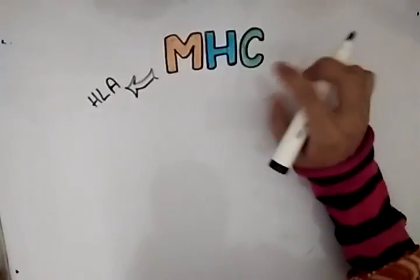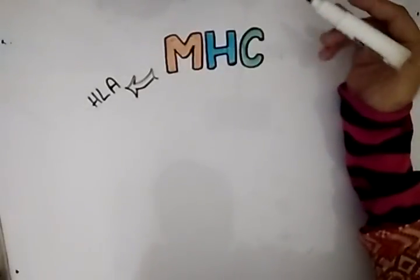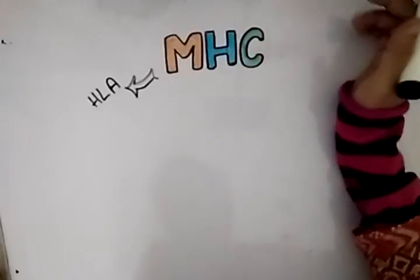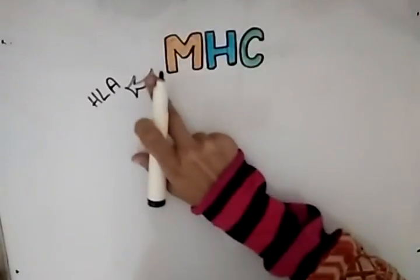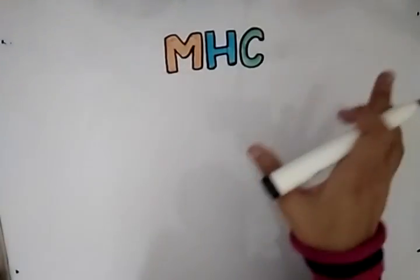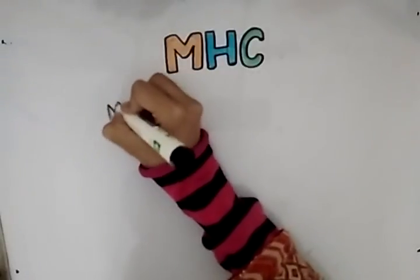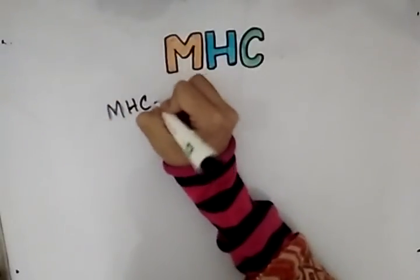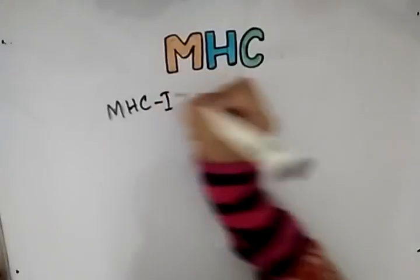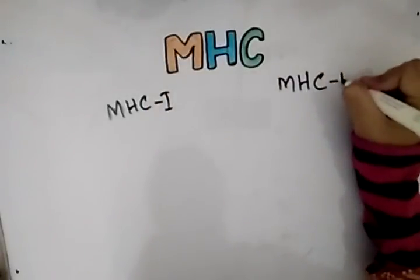Their function is to present the antigens to the T cells, and they are also involved in graft rejection. There are three main types: MHC1, MHC2, and MHC3. But MHC1 and MHC2 are the main ones. Now we will discuss the difference between MHC1 and MHC2 proteins.